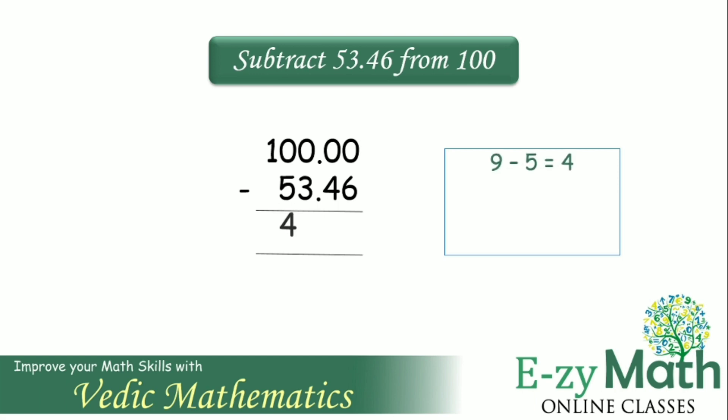9 minus 5 gives us 4. 9 minus 3 gives us 6. 9 minus 4 gives us 5. And the last one should be subtracted from 10. 10 minus 6 gives us 4. Therefore, the answer is 46.54.